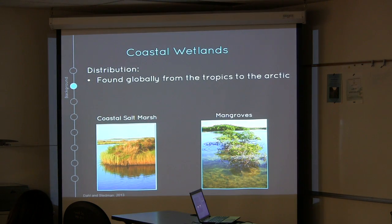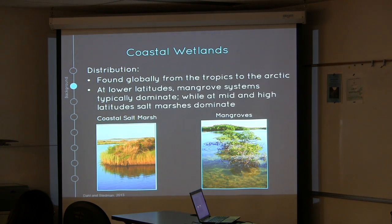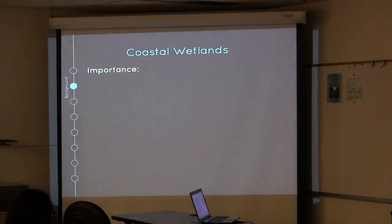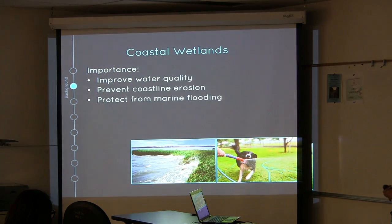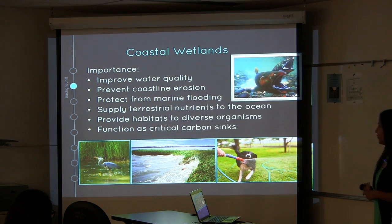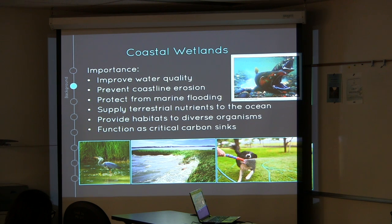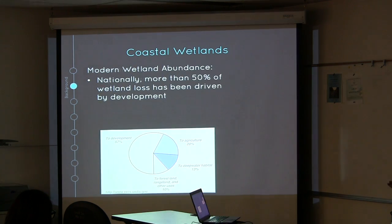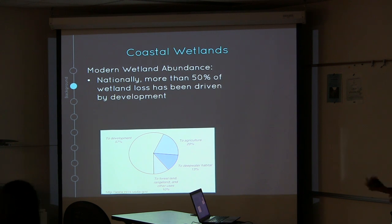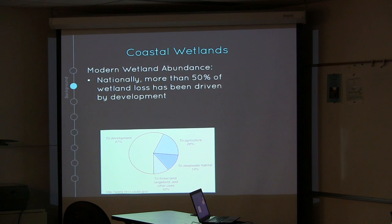Coastal salt marshes are located globally from the tropics to the Arctic. Typically mangroves dominate lower latitudes and coastal salt marshes dominate mid to high latitudes. These are important because they improve overall water quality, prevent coastline erosion, protect from marine flooding, supply terrestrial nutrients to the ocean, provide habitats for diverse organisms, and act as a critical carbon sink. Despite their importance, nationally more than 50% of wetland loss has been due to development — majorly from urbanization and agriculture.